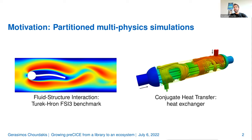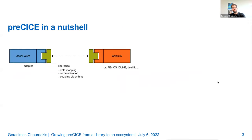One alternative application, also very common, is conjugate heat transfer. Here you see a shell and tube heat exchanger, where the cold fluid and the hot fluid are exchanging heat. One nice feature of preCICE is that here you see more than two coupling participants — we have two fluids separated by solid.